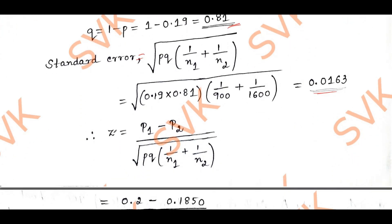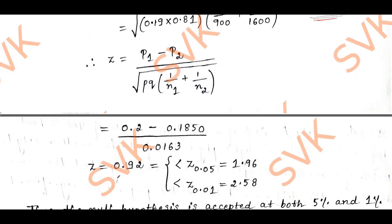I will substitute in the normal variant. Z = (P1 - P2) / sqrt(PQ(1/N1 + 1/N2)). Substituting all these values, I get the value as 0.92.